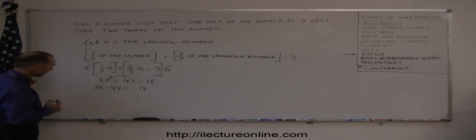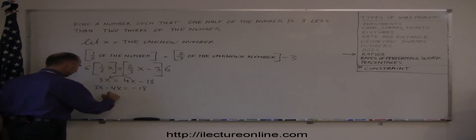Now we can combine like terms, three x minus four x is minus x equals minus eighteen, which means x equals eighteen.